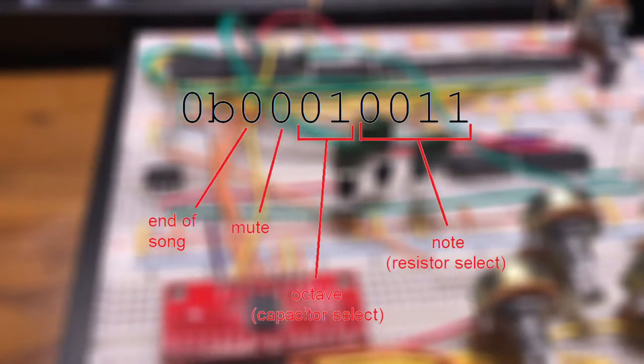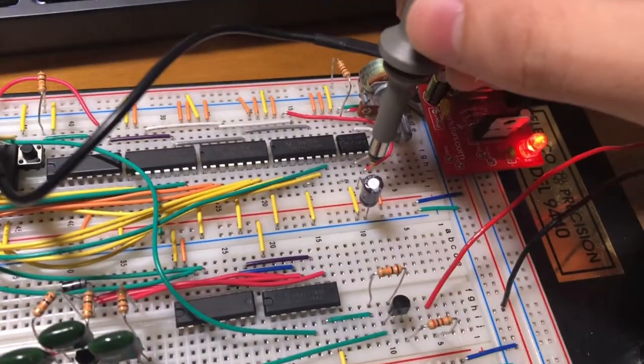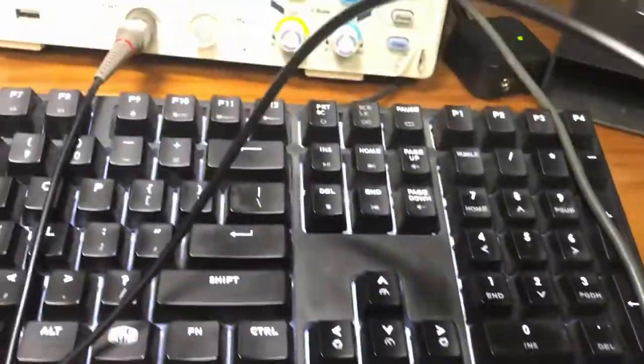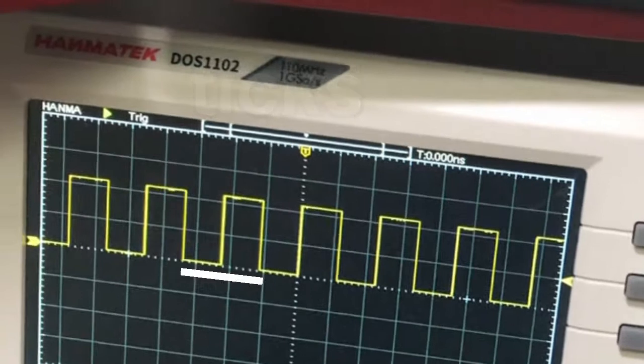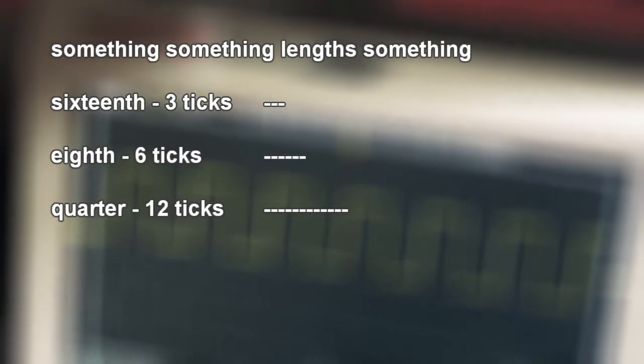While there is a well-established way of storing pitches, there's no real way to store lengths. But the solution is pretty straightforward. Express the length in terms of clock cycles of the counter, which I will refer to from here on as ticks. The base lengths are 3 ticks for sixteenth notes, 6 ticks for eighth notes, 12 ticks for quarter notes, and so forth.